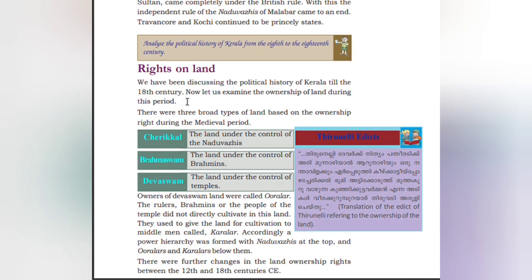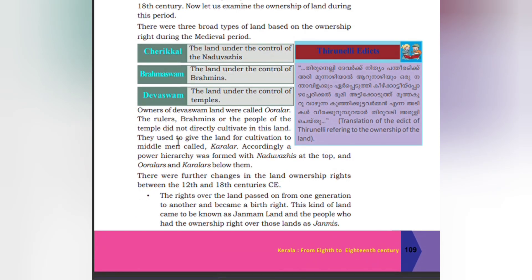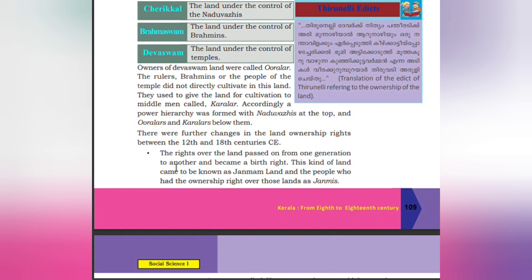Travancore and Kochi continued as princely states. Now let us examine land ownership during this period. There were three broad types of land based on ownership rights during the medieval period: Chayrkel — land under the control of Naduvalis; Brahmaswam — land under the control of Brahmins; Devaswam — land under the control of temples. Owners of Devaswam land were called Uralar. The rulers, Brahmins, and temple communities did not directly cultivate this land. They gave the land for cultivation to middlemen called Karalas. A power hierarchy was formed with Naduvalis at the top, Uralas and Karalas below them. The rights over the land passed from one generation to another and became a birthright. This kind of land came to be known as Janmam land and the people with ownership rights over those lands are called Jenmies.